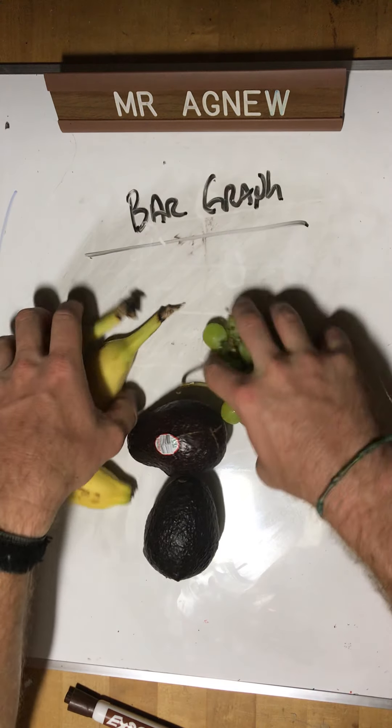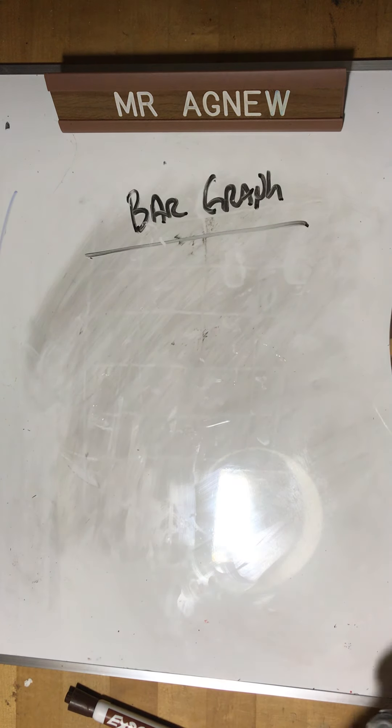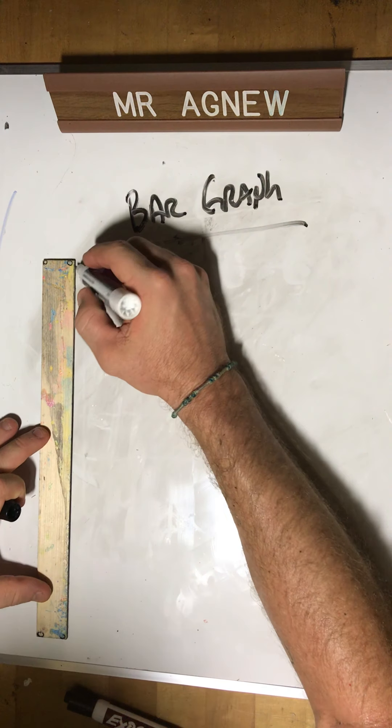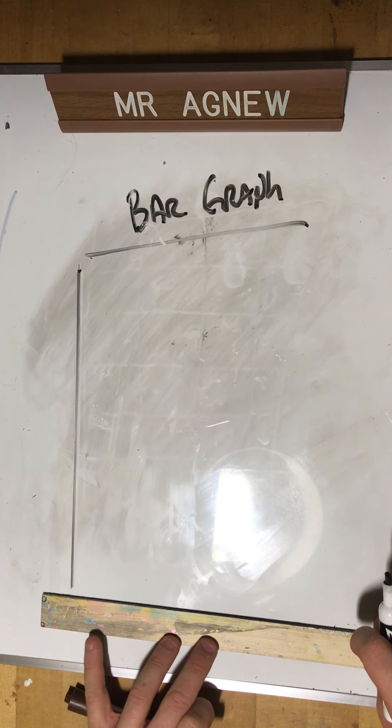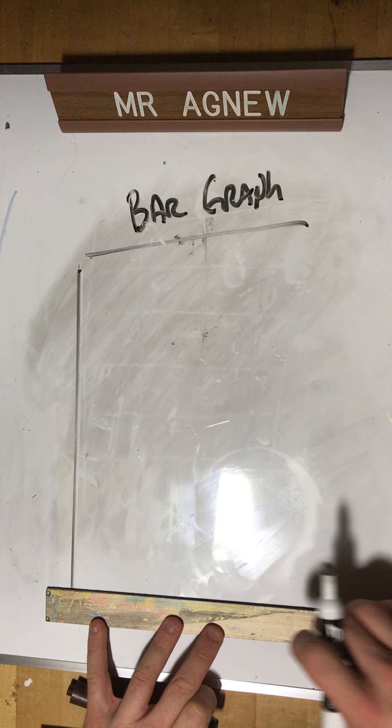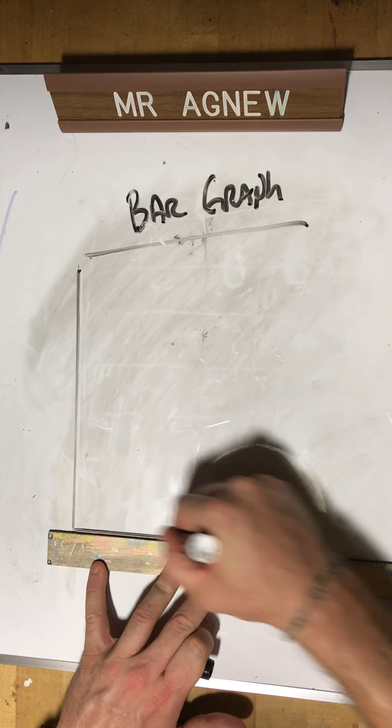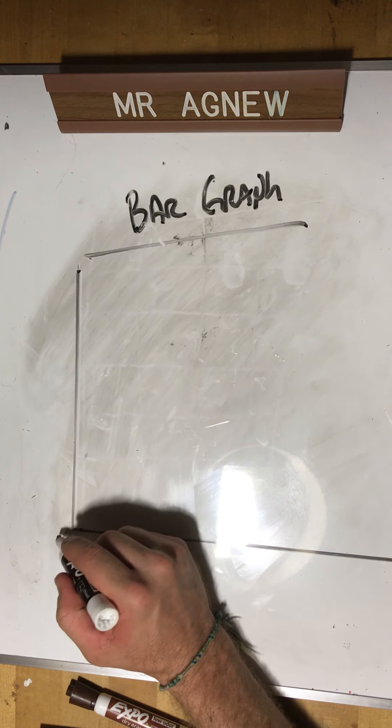Here's what I need to do. I need to make my bar graph. Let's get the fruit out of the way. And for your bar graph, we've done this before. We have our line this way. I'm using just a straight edge, you can use a ruler if you need to. And then I'm gonna go across this way too.